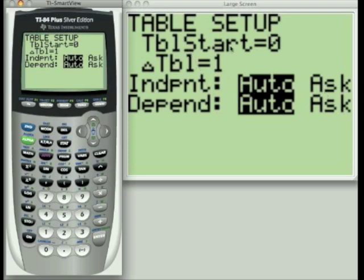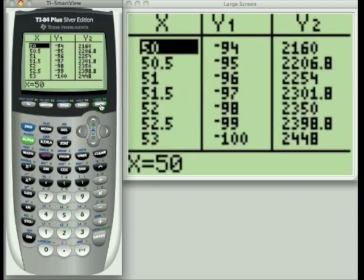Well, let's just change the table start to 50 right now. Say we need to jump way down the table at 50. And then let's just change our table increments to a decimal. Let's say five tenths. And let's go to our table screen, second table, to see the effects.